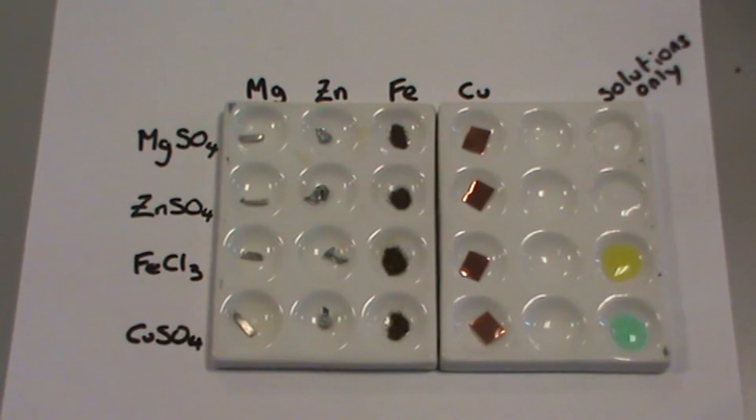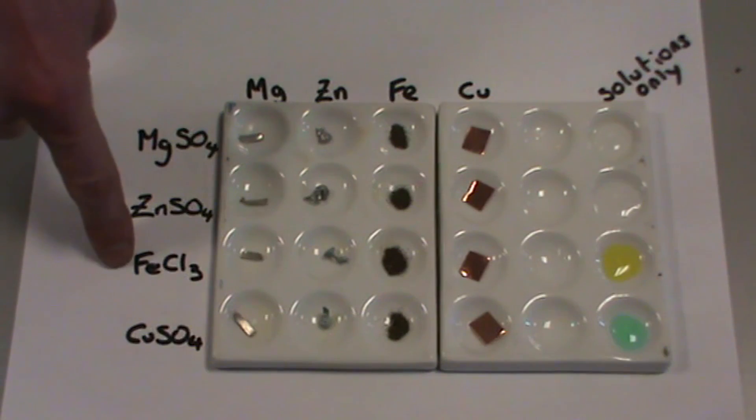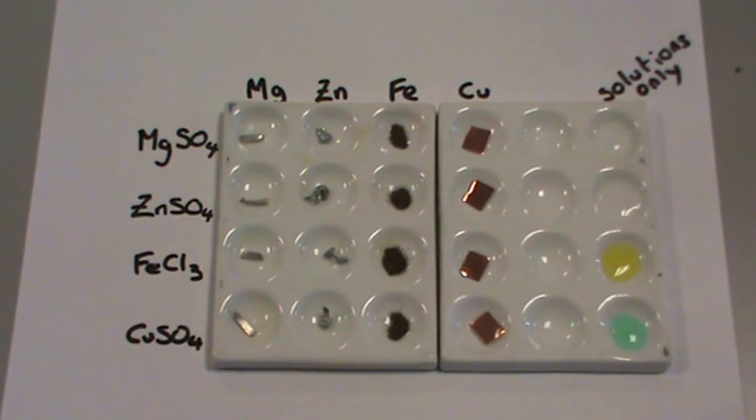We've tried to use a similar quantity of metal for each well, and we'll try and use a similar quantity of solution in each well. You may notice that iron chloride is not iron sulfate. Ideally, we should use the same salt solution for each well.